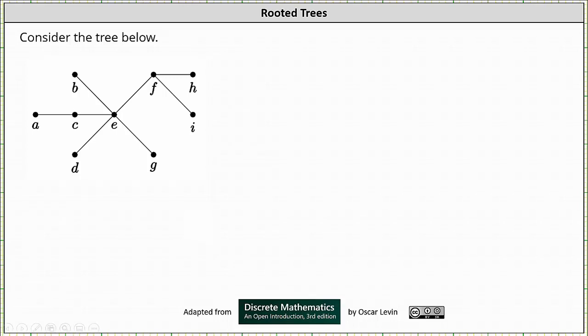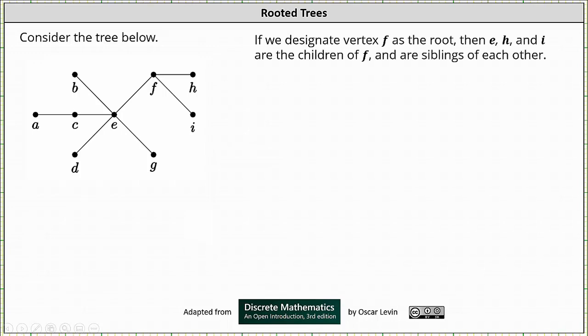Welcome to an example of interpreting a rooted tree. To begin, we need to designate a root. We will designate the vertex F as the root, this vertex here.